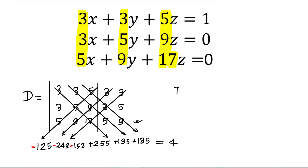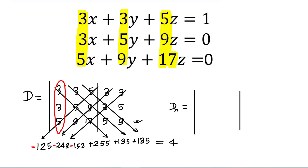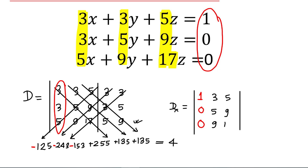Now how do we calculate Dx? To calculate Dx, the determinant will be the same, only we replace the first column — which is 3, 3, 5 — with the right-hand side numbers, that is 1, 0, 0. So now in the first column we will have 1, 0, 0, and the rest remains the same: second column 3, 5, 9 and third column 5, 9, 17. We have to calculate this determinant value.